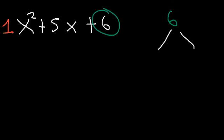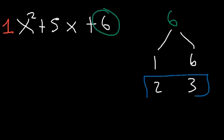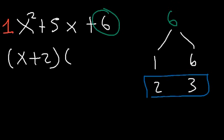Let's make a list of the numbers that multiply to 6. 1 times 6 is 6, and 2 times 3 is 6. But only 2 plus 3 adds to 5, so we need to use 2 and 3. So the answer is going to be x plus 2 times x plus 3. That's not bad, is it?